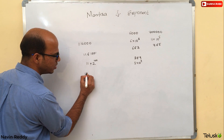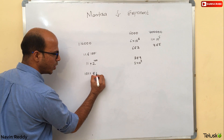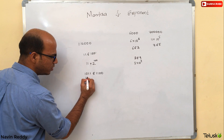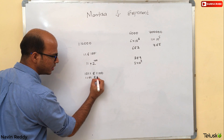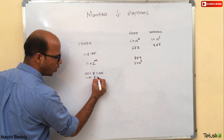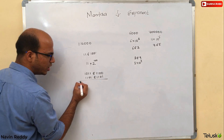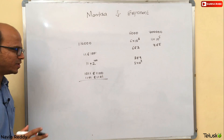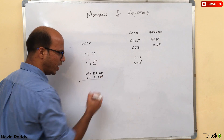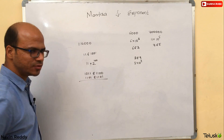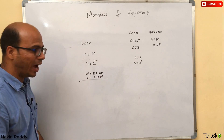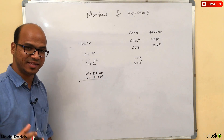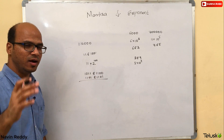Let's say the first number is 1011E1100 and the second number is 1101E1101. Can you add these two numbers directly? It is not that straightforward because the exponents are different. Can we add them directly when the exponents differ? Not exactly.